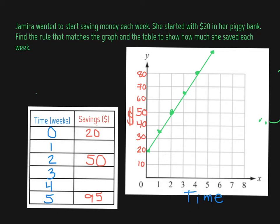I want to point something out to you here. This is some interesting information. She started with $20 in her piggy bank. That means that when our time is 0, right here, she already has $20. We're going to come back to that momentarily when we write our rule.